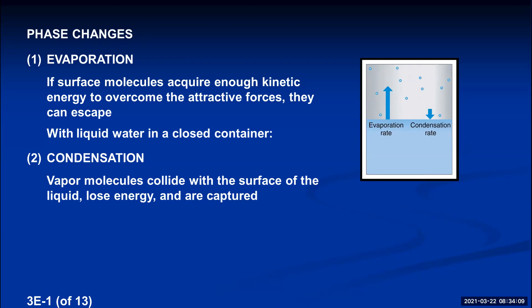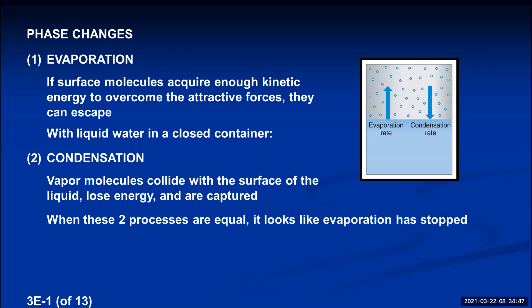As more vapor builds up in the container, there is a greater statistical probability of a vapor molecule hitting the liquid and being recaptured, so the rate of condensation increases. So as long as evaporation is going faster than condensation, you continue to build up vapor molecules. This continues until eventually there are so many vapor molecules in the container that the rate of condensation exactly equals the rate of evaporation.